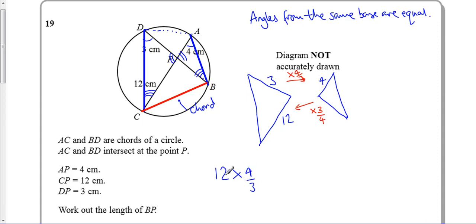Or the other way around, 12 times 4 is 48 divided by 3 is 16. So the length of B to P is 16. So the length of BP is 16 centimeters.